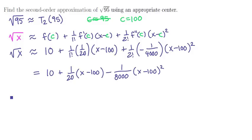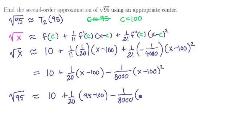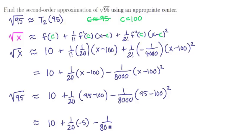Now we plug in 95: the square root of 95 is approximately 10, plus one twentieth times 95 minus 100, minus one eight thousandth times 95 minus 100 squared. That gives us 10 plus one twentieth times negative five, minus one eight thousandth times 25 — which simplifies to 10 minus five twentieths plus 25 eight thousandths. Crunching those fractions on a calculator gives us 9.753125, and that is our second order Taylor approximation.